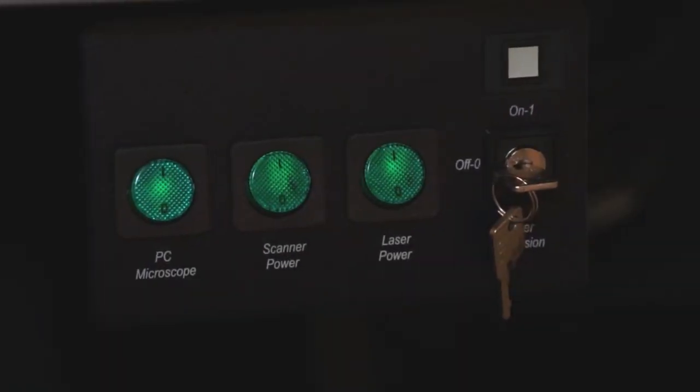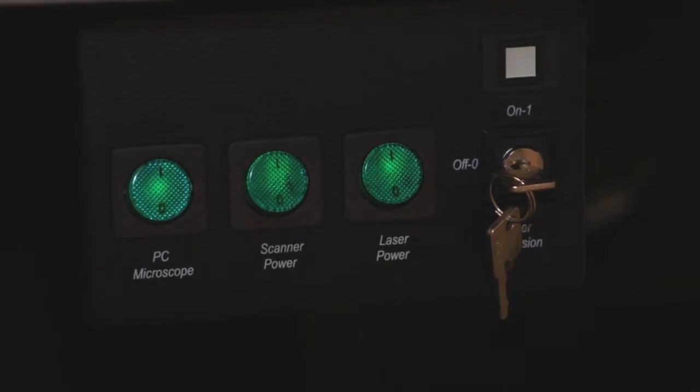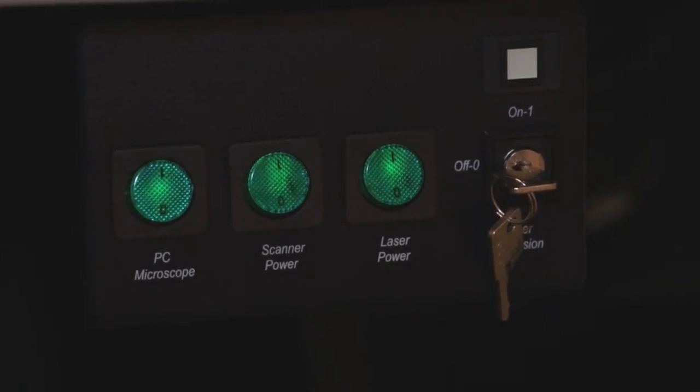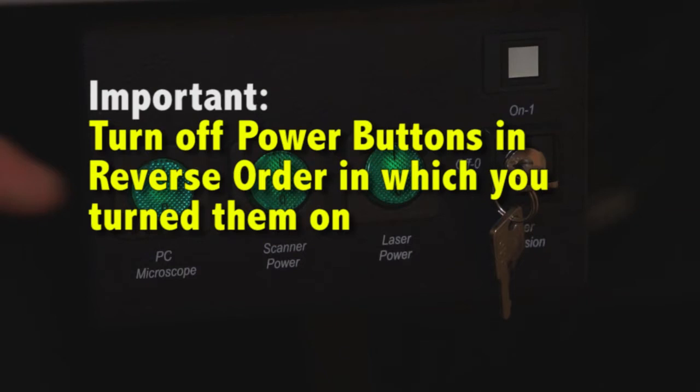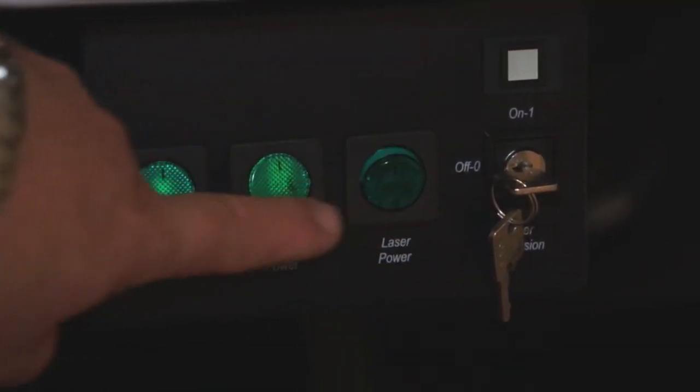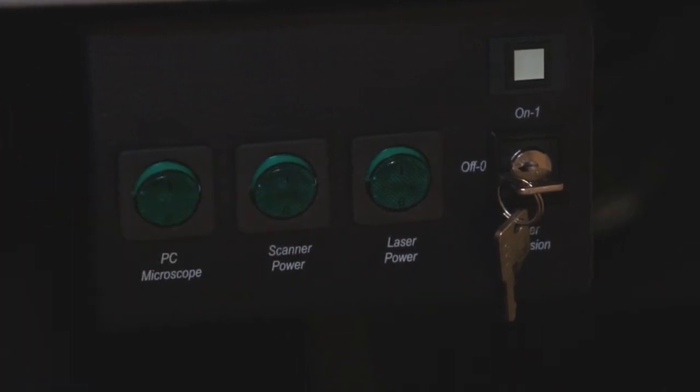To turn off power to the system, you now depress each button in the reverse order to which you turned them on. So from right to left until all the power is off.